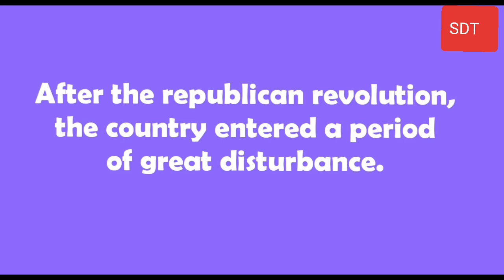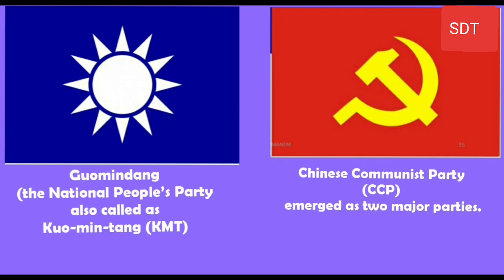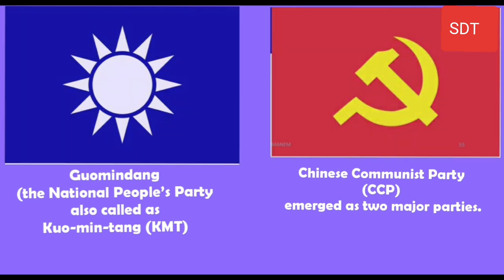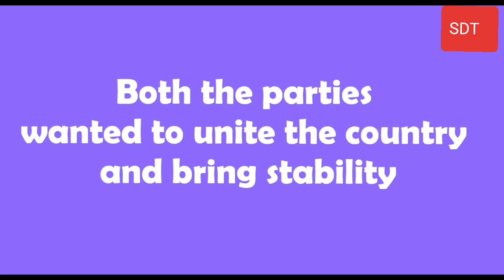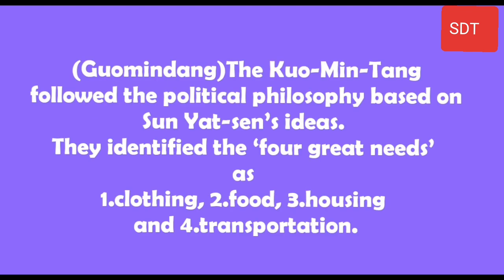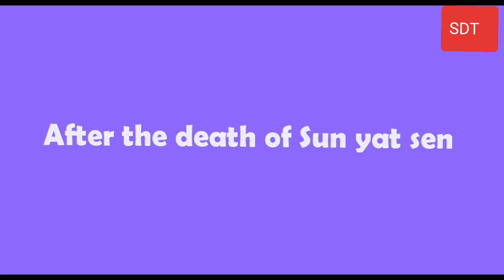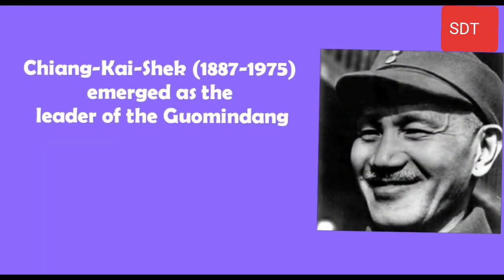After the Republican Revolution, the country entered a period of great disturbance. The Guomindang, the National People's Party also called KMT, and the Chinese Communist Party (CCP) emerged as two major parties. Both parties wanted to unite the country and bring stability. The Guomindang followed a political philosophy based on Sun Yat-sen's ideas and identified four great needs: clothing, food, housing and transportation. After the death of Sun Yat-sen, Chiang Kai-shek emerged as the leader of the Guomindang.